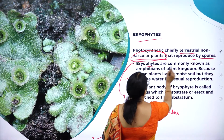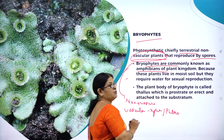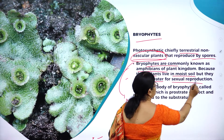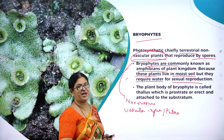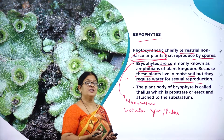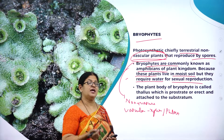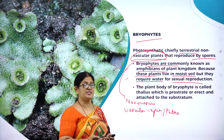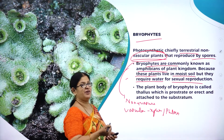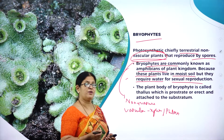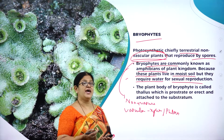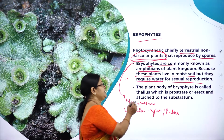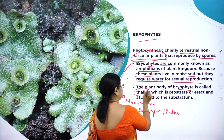Bryophytes are commonly known as amphibians because these plants live in moist soil but require water for sexual reproduction, just like frogs. The female frog goes to water to lay eggs and the male frog sheds the sperms on the eggs - the process of fertilization is external. In a similar way, bryophytes also require water for sexual reproduction, hence they are referred to as amphibians of the plant kingdom.